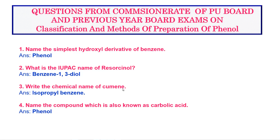Write the chemical name of cumene. Isopropyl benzene is called cumene. Name the compound which is also known as carbolic acid. Phenol is also known as carbolic acid.